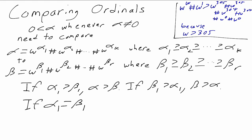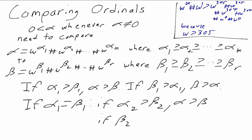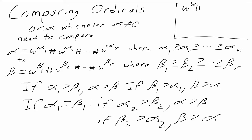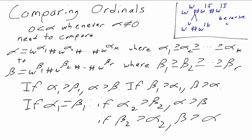If alpha one and beta one are equal, we go on to the next term. Then if alpha two is bigger than beta two, alpha is bigger, and if beta two is bigger, beta is bigger. For example, comparing omega to the omega plus omega to the 15 plus omega to the 15 with omega to the omega plus omega to the 16: the first terms are equal, so we go to the second term, and since 16 is bigger than 15, the second ordinal is bigger.